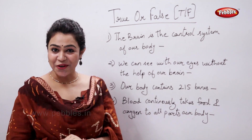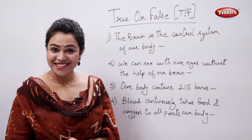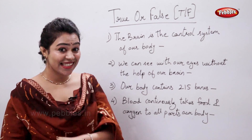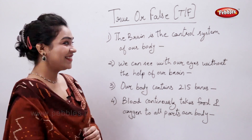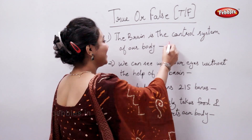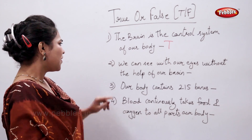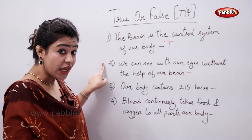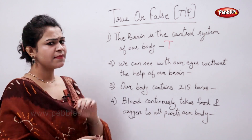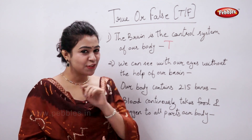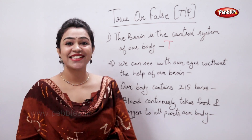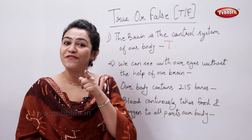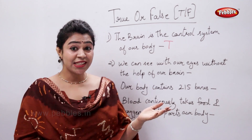True or false: the brain is the control system of our body? Come on students, tell me — is it true or false? Yes, that's true! We can see with our eyes without the help of our brain — what do you think? Is it true or false? That's false.